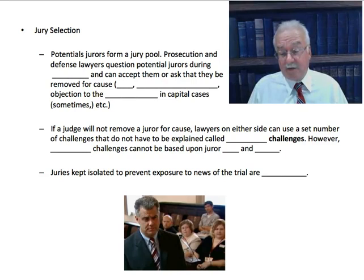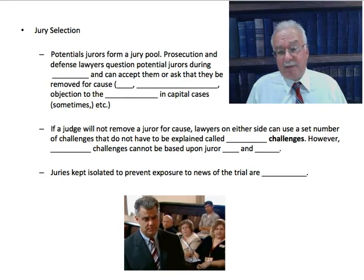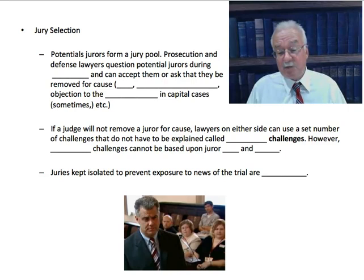Prosecutors and defense attorneys can accept jurors or ask that they be removed for cause. Causes might include bias such as racial bias, conflict of interest — maybe the juror is a relative of the person on trial — or in capital cases, objection to the death penalty. If a judge will not remove a juror for cause, lawyers on either side can use a set number of challenges that do not have to be explained, called preemptory — P-R-E-E-M-P-T-O-R-Y — challenges.